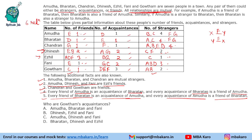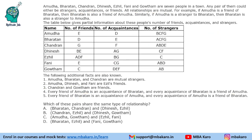Now we can find out who is related to whom through friends, acquaintances, or strangers. The first question asks: who are Gautam's acquaintances? Gautam's acquaintances are Dinesh, Ezil, and Fani. The next question asks which pairs share the same type of relationship. Bharatan and Chandran are strangers, Dinesh and Ezil are friends — not the same. Chandran and Ezil are strangers, Dinesh and Gautam are acquaintances — not the same. Amudha and Gautam are strangers, Ezil and Fani are friends — not the same. Bharatan and Ezil are acquaintances, and Fani and Gautam are also acquaintances — so these pairs share the same type of relationship.